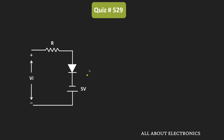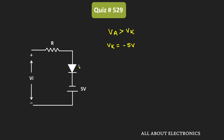So here the given diode is the ideal diode and we know that for the ideal diode, when the voltage at the anode is greater than the voltage at the cathode, then the diode remains in the forward bias condition. So here if you see, the voltage at the cathode of the diode is equal to minus 5 volts. That means when the voltage at the anode is more than minus 5 volts, at that time this diode will remain in the on condition.